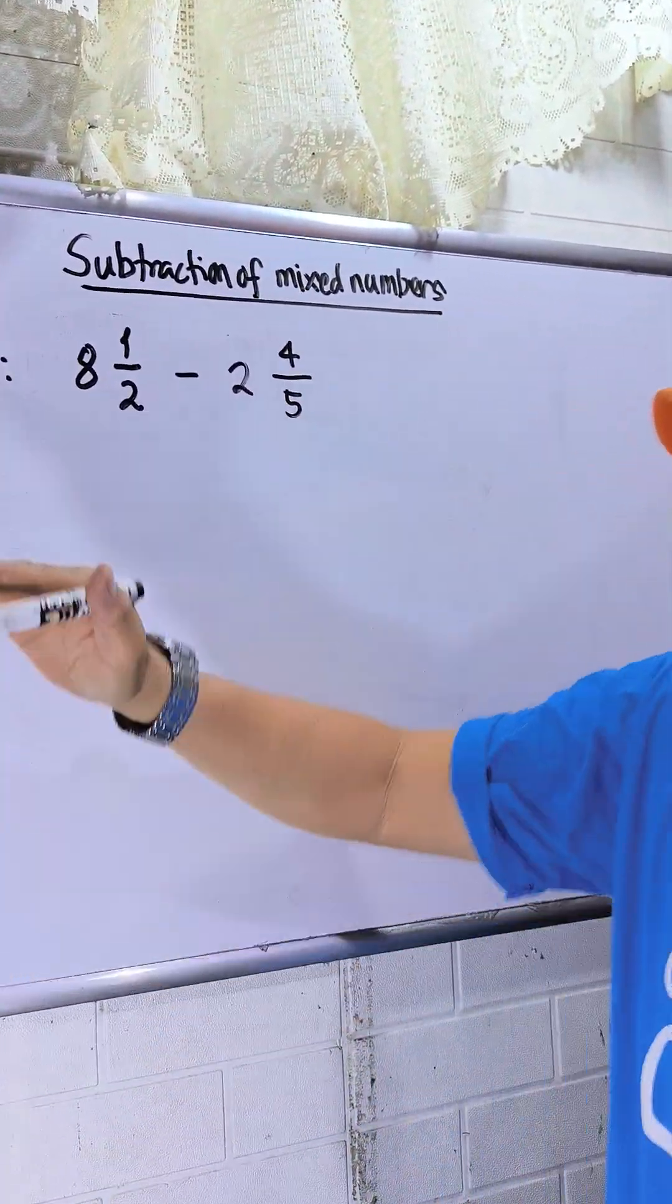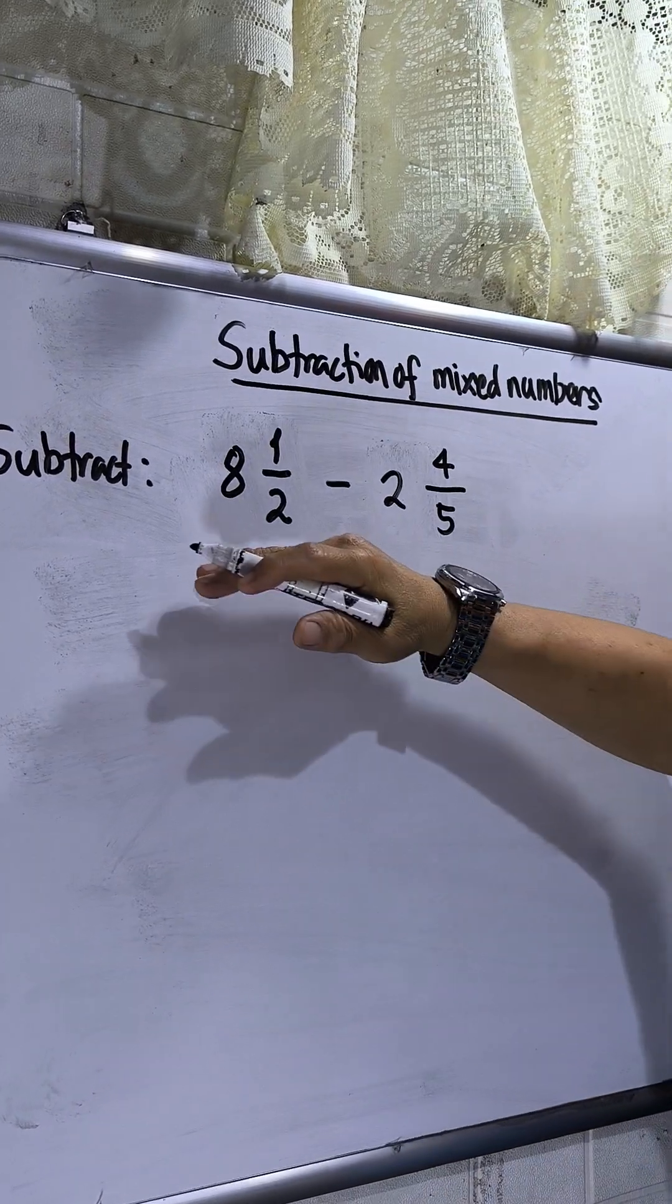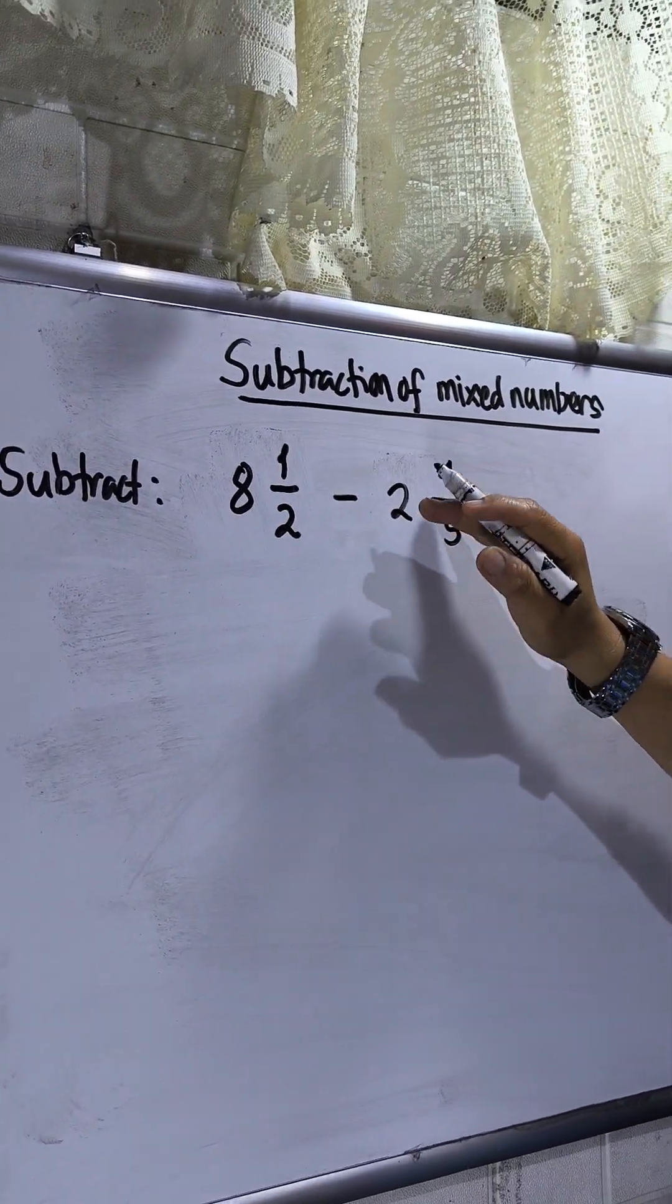Hello everyone. Kids, join with me to solve this subtraction of mixed numbers. I have 8 and 1 half minus 2 and 4 over 5.